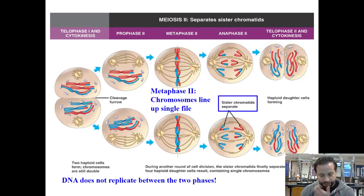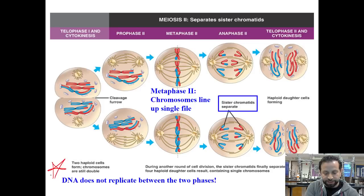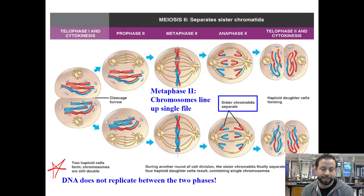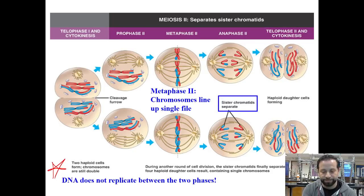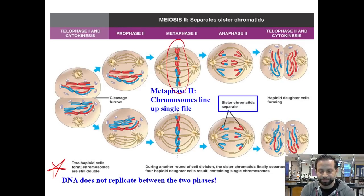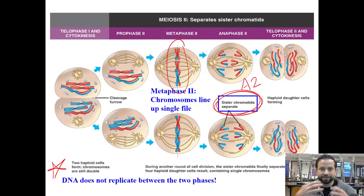From there we go to meiosis II, but it's really important to note that DNA does not replicate between the two phases. If it did, it would defeat the purpose, because at the end we want to end up with four cells each having half the number of chromosomes. In metaphase II, chromosomes line up single file — we no longer have homologous chromosomes here. Now we have sister chromatids separating. In anaphase II, sister chromatids separate from each other, and notice crossing over has already taken place.